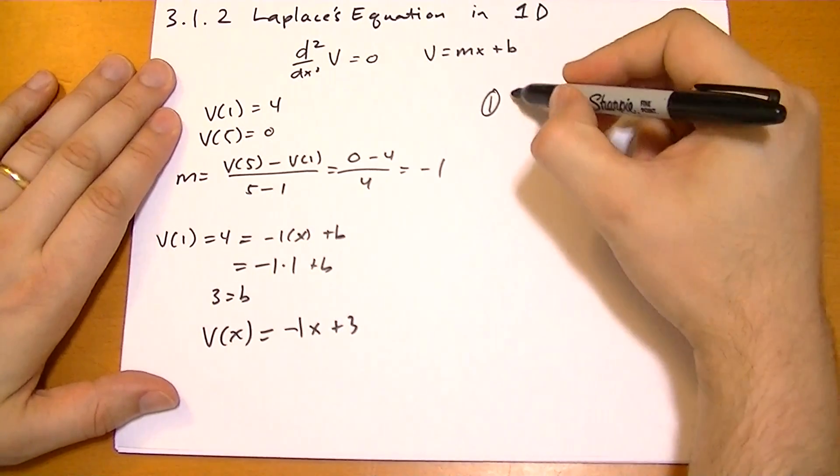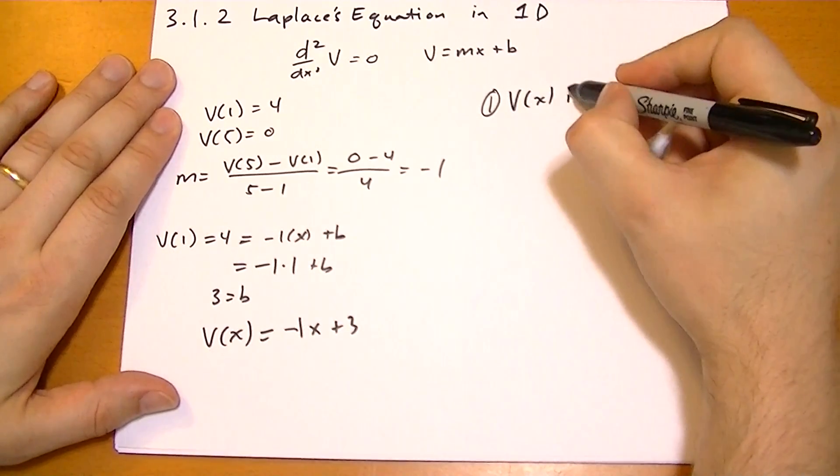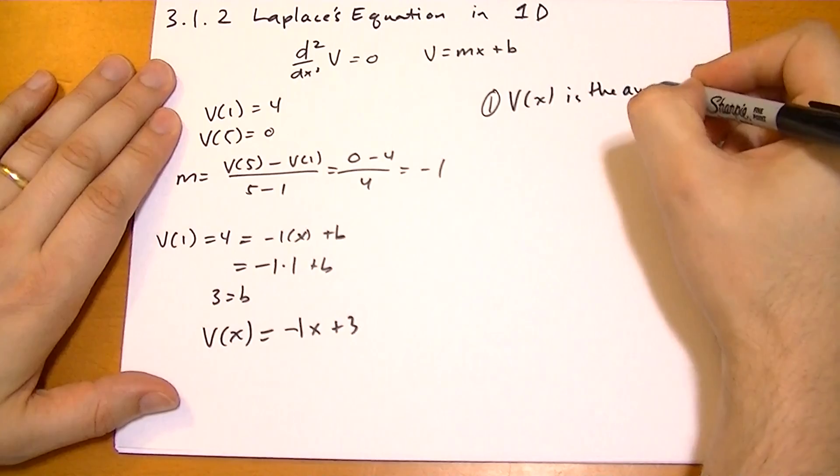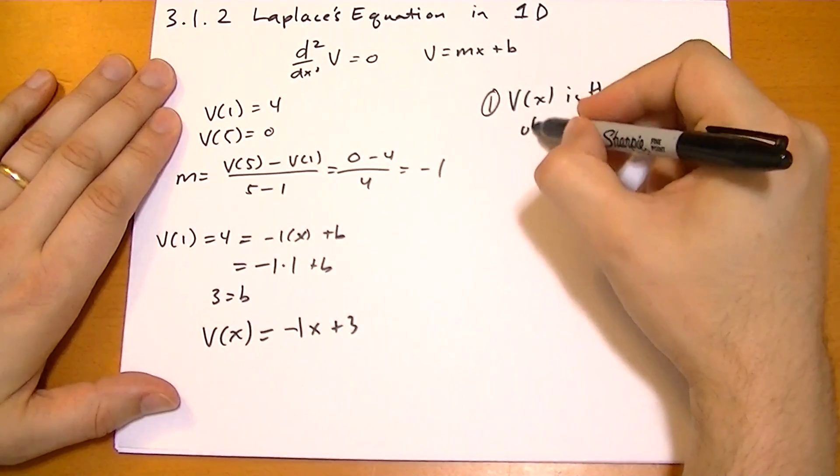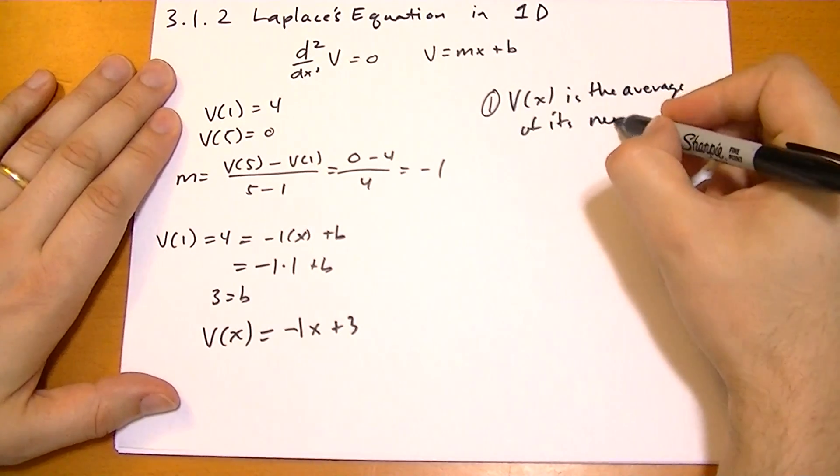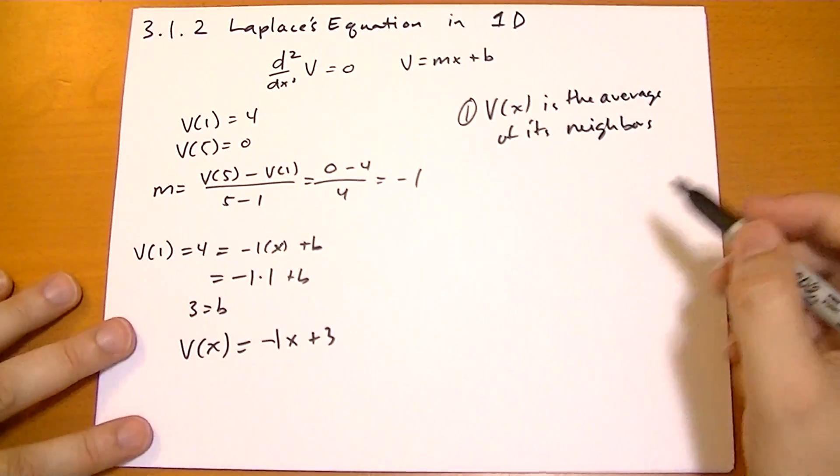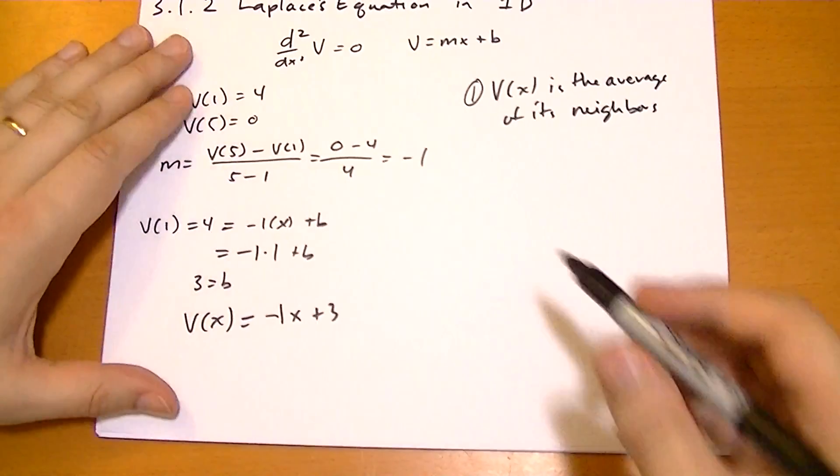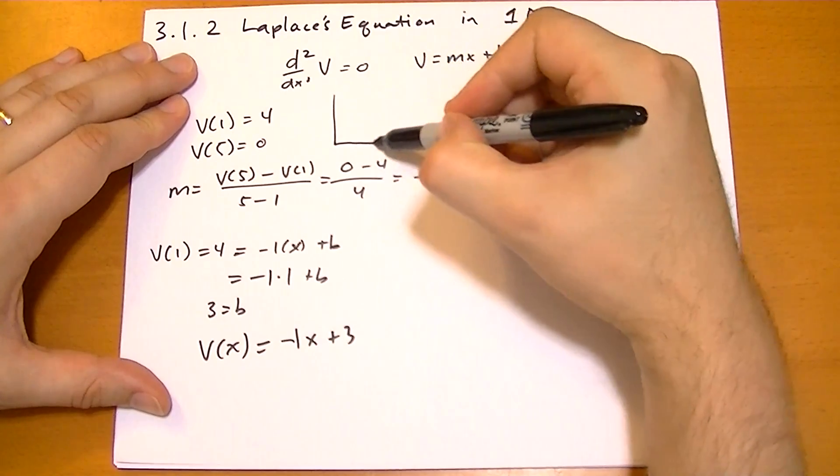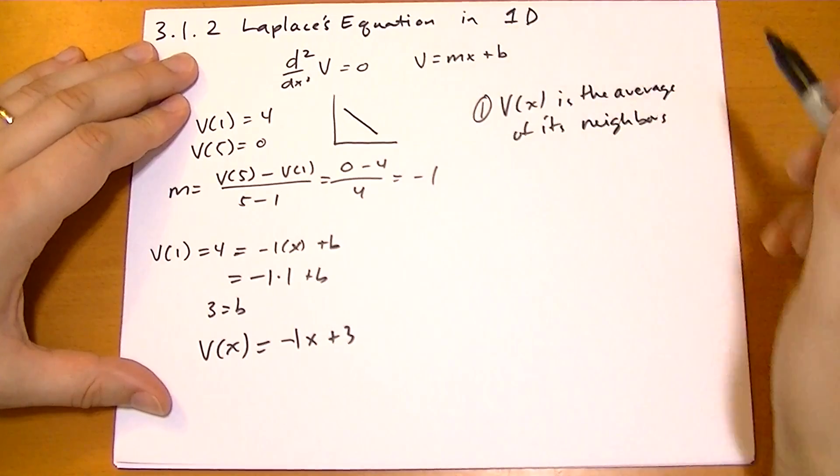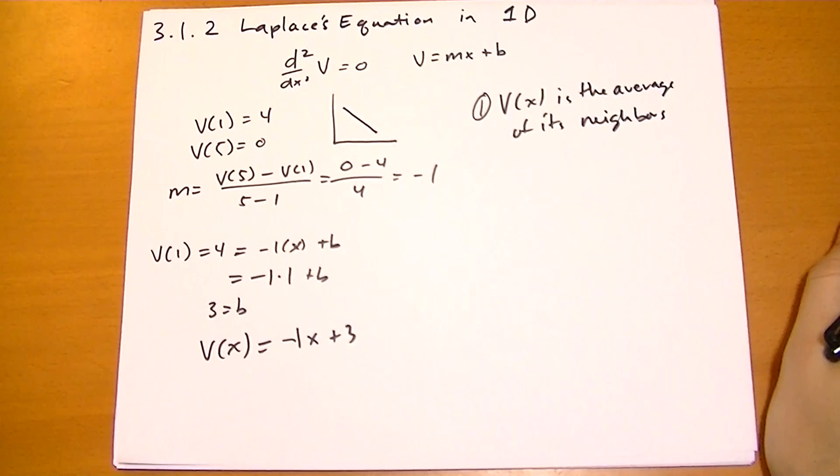So one is that v(x) is the average of its neighbors. Okay. So why is that so? Well, let's actually draw a little graph here of what v of x might look like. So that might be v of x. So just a line because it doesn't have acceleration.